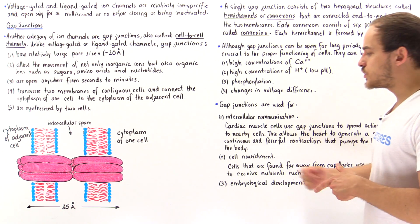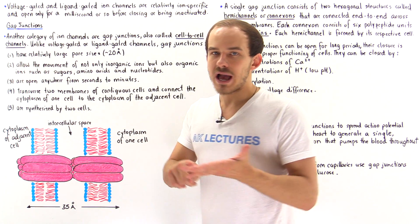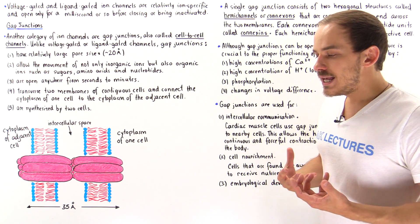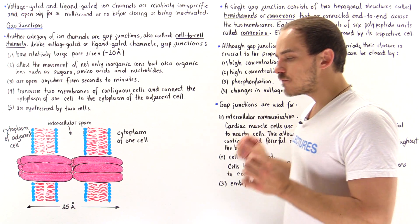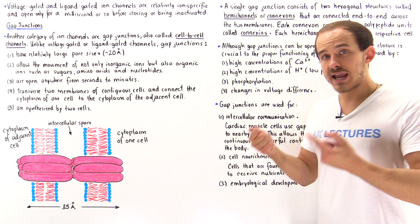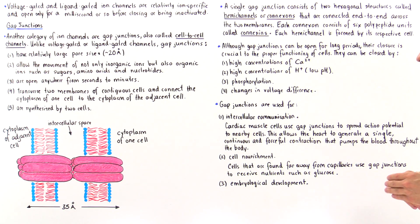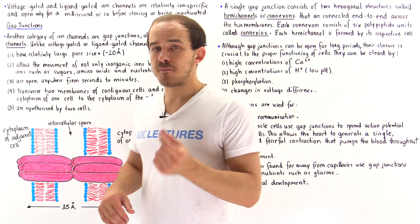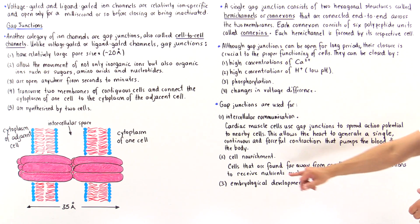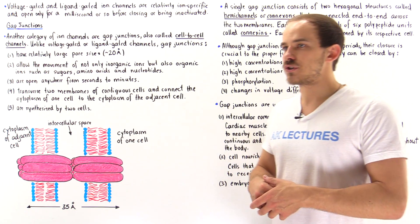Function number two is cell nourishment. Every single cell in our body needs things like glucose, amino acids, and nucleotides to survive and function correctly. However, not all cells are found next to capillaries, meaning not all cells can directly obtain nutrients from the blood. That's where gap junctions come into play. Certain cells found far away from capillaries — such as cells in our bone and cells in our eye — depend on gap junctions to receive proper nutrients like glucose, nucleotides, and amino acids.